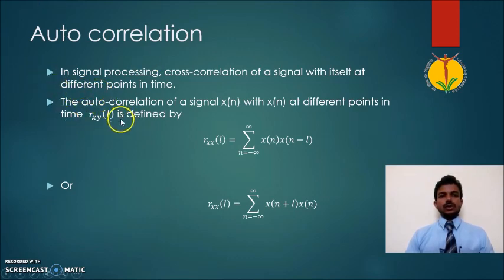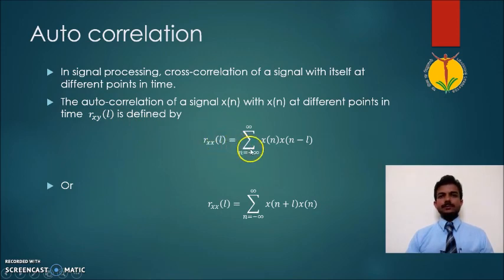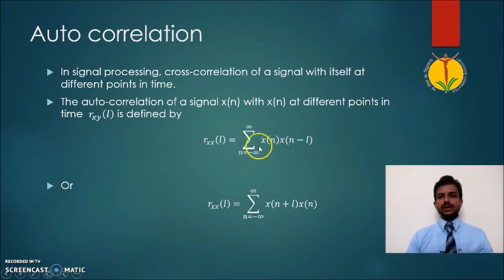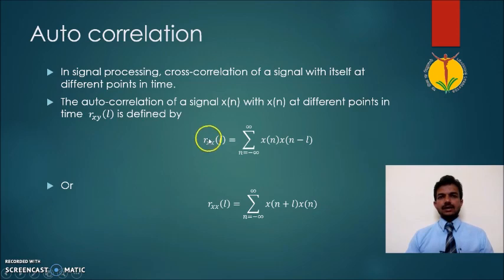Let us define autocorrelation mathematically. The autocorrelation R_xx for the L-th sample is given by the summation from n equals minus infinity to infinity of x(n) multiplied by x(n minus L). So here the signal x is compared again with itself — that is why it is called autocorrelation.